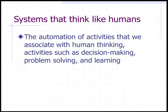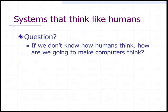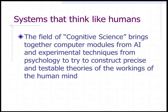Systems that think like humans refers to the automation of activities we associate with human thinking — activities such as decision making, problem solving, and learning. If you don't know how humans think, how are we going to make computers think? Without truly understanding how a human thinks, it's hard to make a computer think. In the field of cognitive science, it brings together computer models from AI and experimental techniques from psychology to construct precise and testable theories of the workings of the human mind.